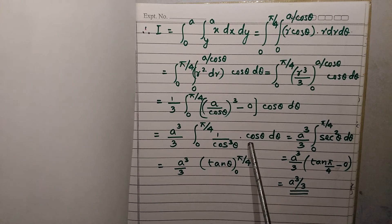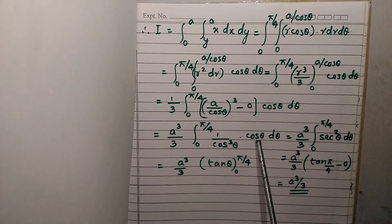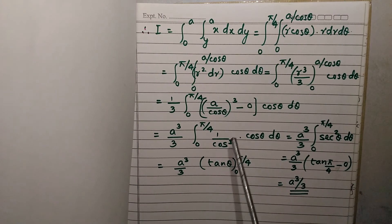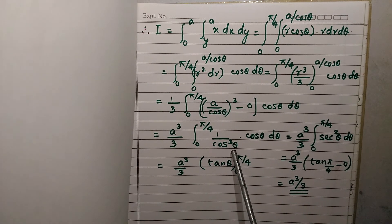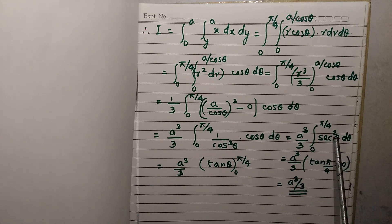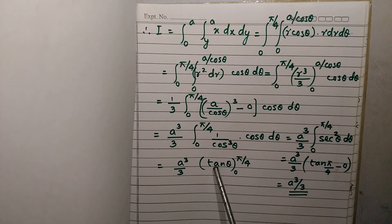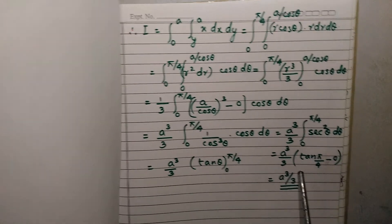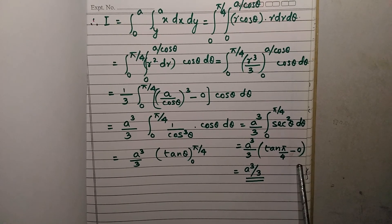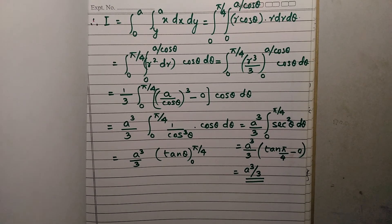A cubed is taken outside. Now cos theta upon cos cubed theta is 1 upon cos squared theta, and 1 upon cos squared theta is sec squared theta. The integral of sec squared theta is tan theta. Applying the limits: tan(pi/4) minus tan(0) equals 1 minus 0 equals 1. So the final answer is 1 times A cubed by 3, which equals A cubed by 3. Thank you.